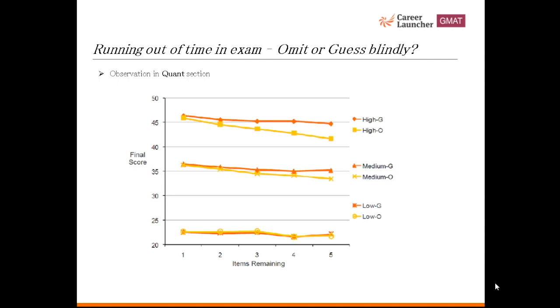The drop in the score will be lower than in case of omitting the questions. If a person was scoring 46, the score will drop to 45 in case of guessing wrong, but if the questions are omitted the drop will take the score to 40. There is not much of a difference in the two cases when the test taker is already scoring low.